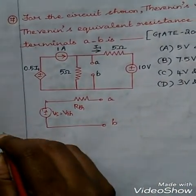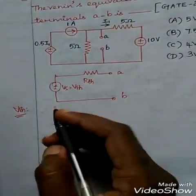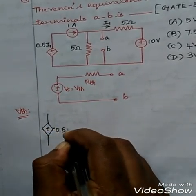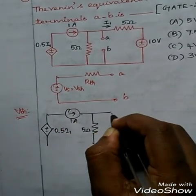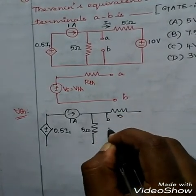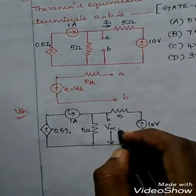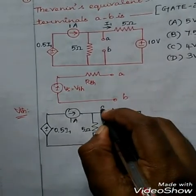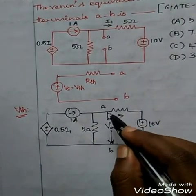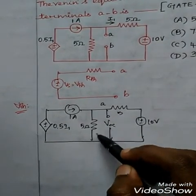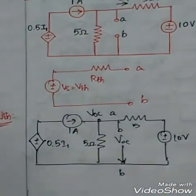Vth is nothing but the open circuit voltage across the terminals A and B. Drawing the circuit: plus minus 0.5 I1, here 1 ampere, here 5 ohms and 5 ohms, and we need to find the value of VOC. Finally we have a 10-volt branch. This is the voltage we need to find across the terminals A and B — VOC, which is Vth. This particular branch is parallel with the VOC branch, so this potential is VOC. Just apply KCL in this particular node to easily find the value of VOC.